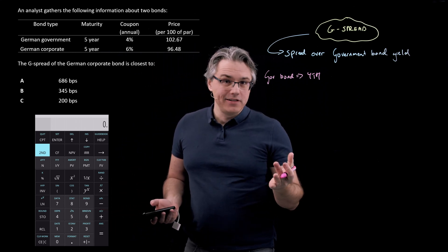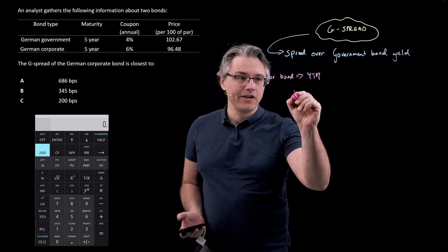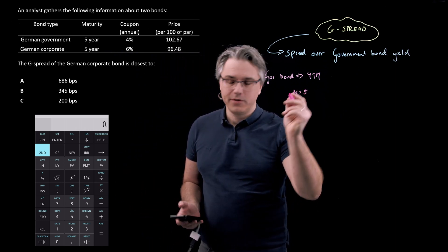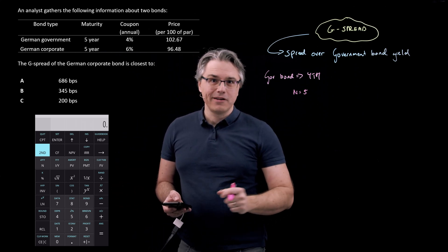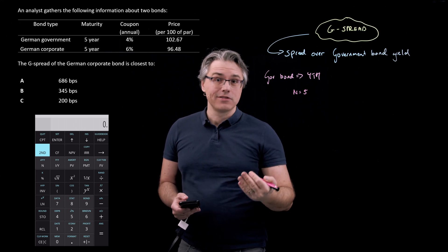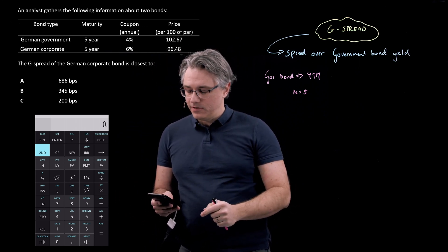So obviously in any order you wish you can do this, but I'm going to have N set up as five because it is a five year bond. Let me remind you that when you provide inputs into the time value of money worksheet,